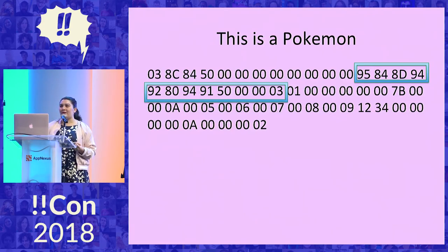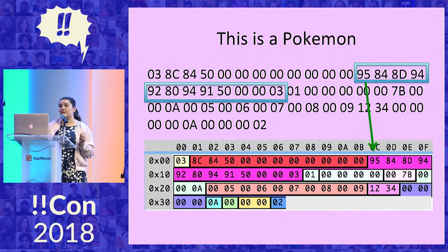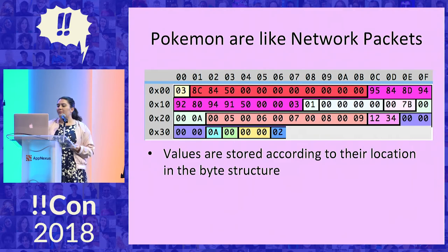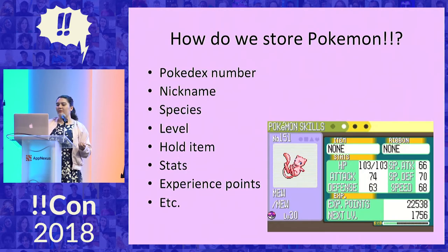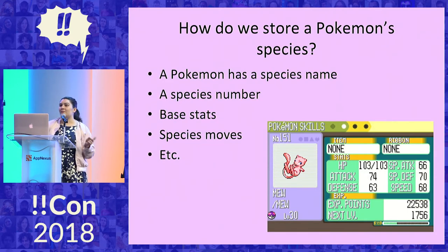Going back to where these bytes were — the string was actually a lot longer than it needed to be. This is because Pokemon are stored in a structure where the location of bytes matters. No matter what the nickname is, it's going to be stored in the same number of bytes in the same location. You can see the different areas that store different things highlighted in different colors. You can think of the Pokemon as like a network packet — everything is stored according to location. But how can we encode everything in so few bytes, given that Pokemon had all this information plus more? Let's focus just on the species and the information stored with it. The Pokemon species has a species name, species number, and base species moves — all the same for all Pokemon of the same species.